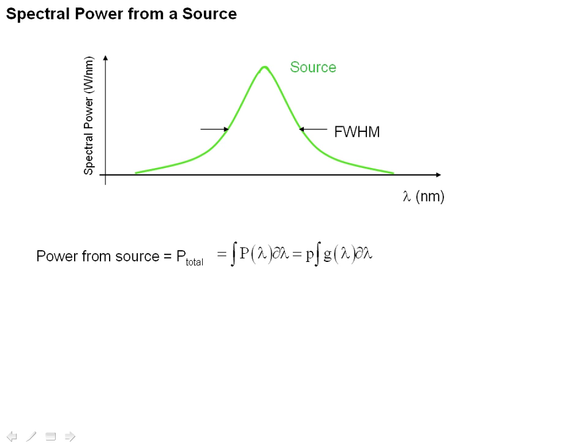A light source gives power over many different colors or many different wavelengths, and the total amount of optical power in watts that comes out of the source is given by the area of the curve that plots the intensity as a function of wavelength. That's shown by the green curve in the slide, and the total amount of power is simply the area under the curve.